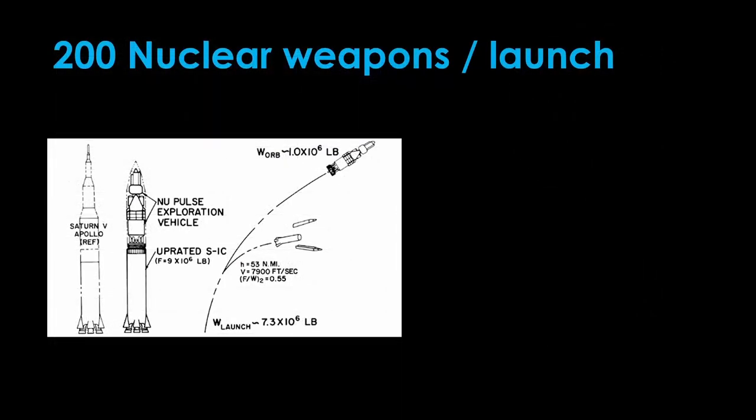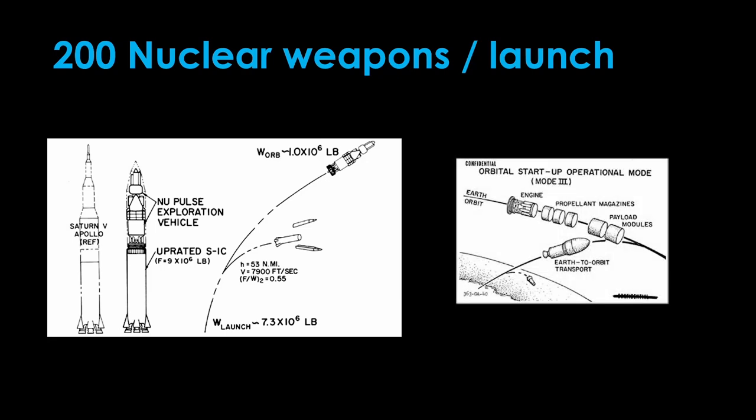Orion did have a slight downside, the issue that launch would involve 200 nuclear weapons exploding in the atmosphere. That pretty much made it a non-starter. There were some hybrid designs. Here's one of a Saturn V first stage and an Orion vehicle on top. It doesn't start using the Orion drive until it reaches about 90 kilometers in altitude. And here's another where you would launch the Orion with traditional rockets and put it together in orbit.